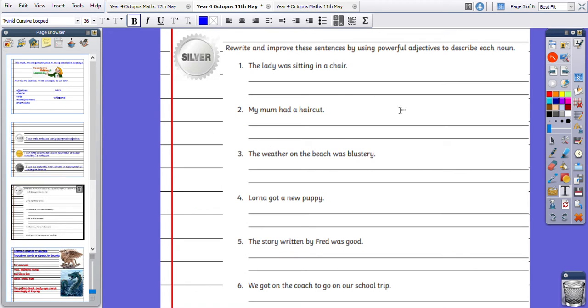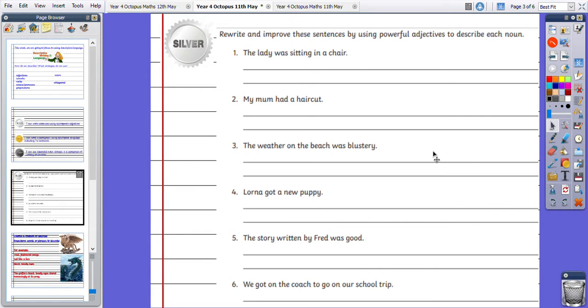So your silver activity today, you have some sentences here which are really basic. And I want you to uplevel them by using some powerful adjectives to describe each noun. So the first example is the lady was sitting in a chair. So think about what nouns there are in that sentence, what naming words. So I know, for example, that lady is a noun. And I also know that chair is a noun. So there are two nouns there that I could describe with adjectives.